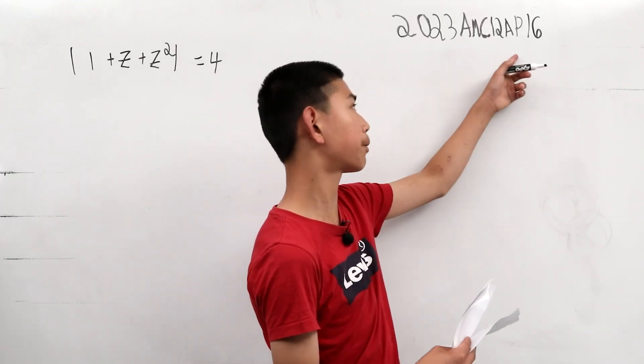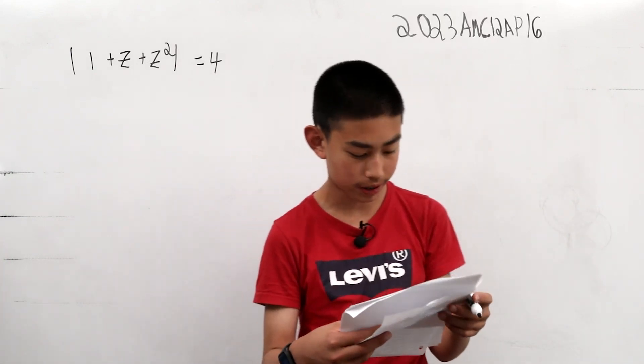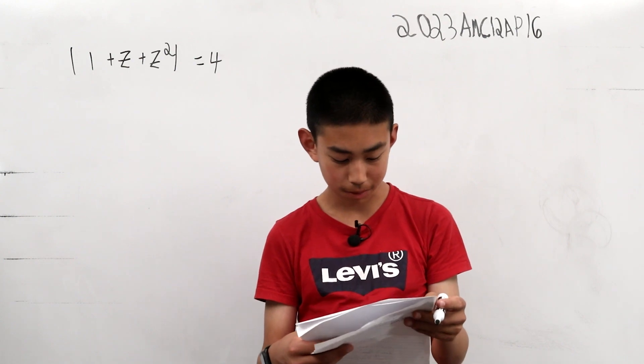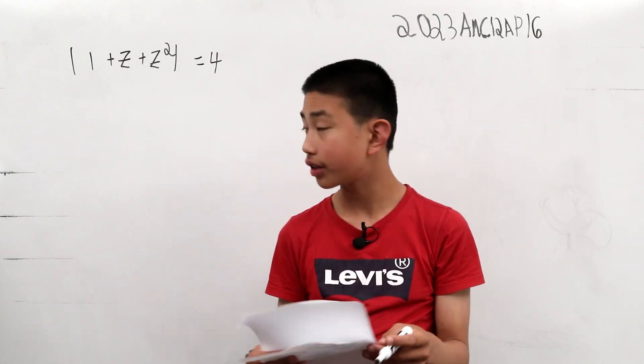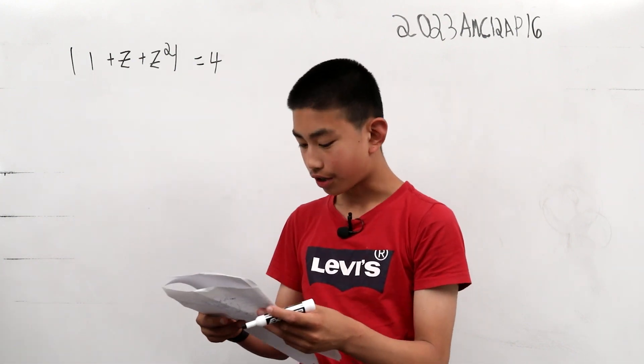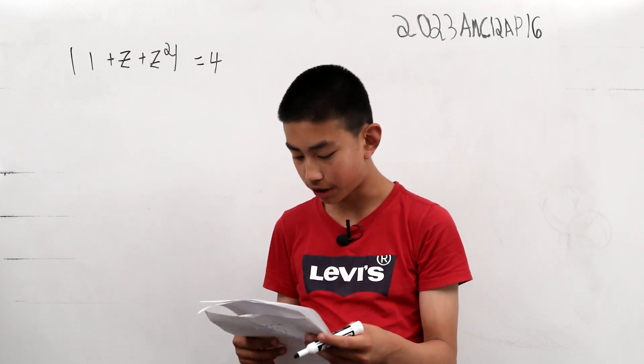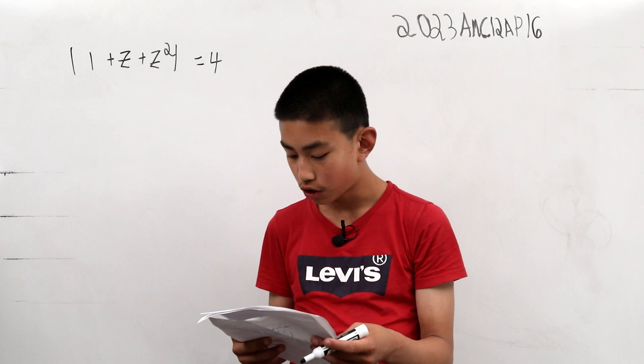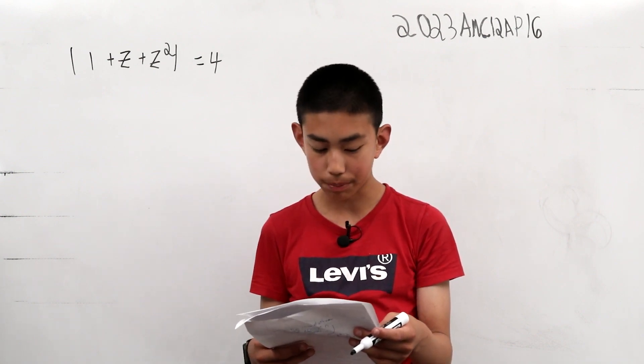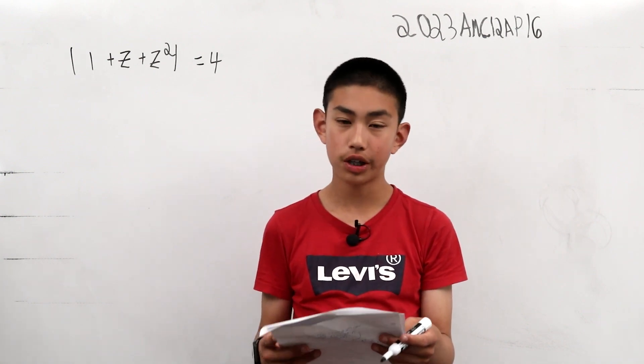We're solving problem 16 from the AMC 12A from 2023. Consider the set of complex numbers z satisfying this equation right here. The maximum value of the imaginary part of z can be written in the form square root m over n, where m and n are relatively prime positive integers. What is m plus n?